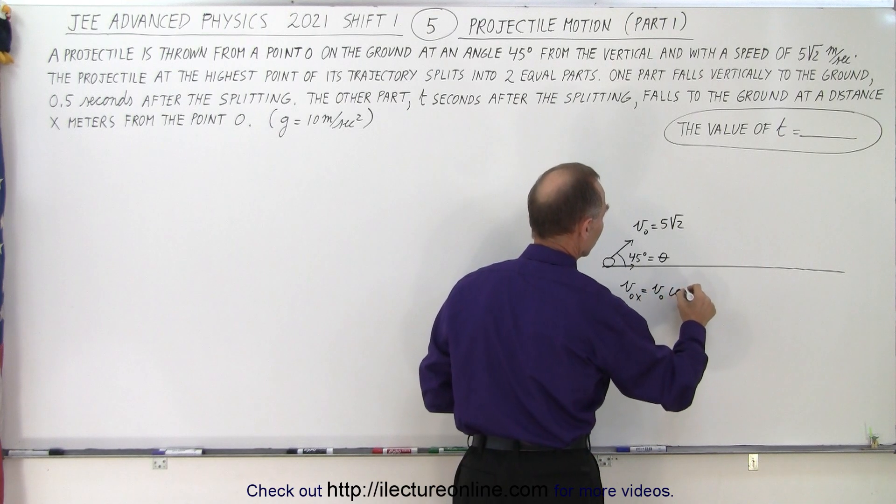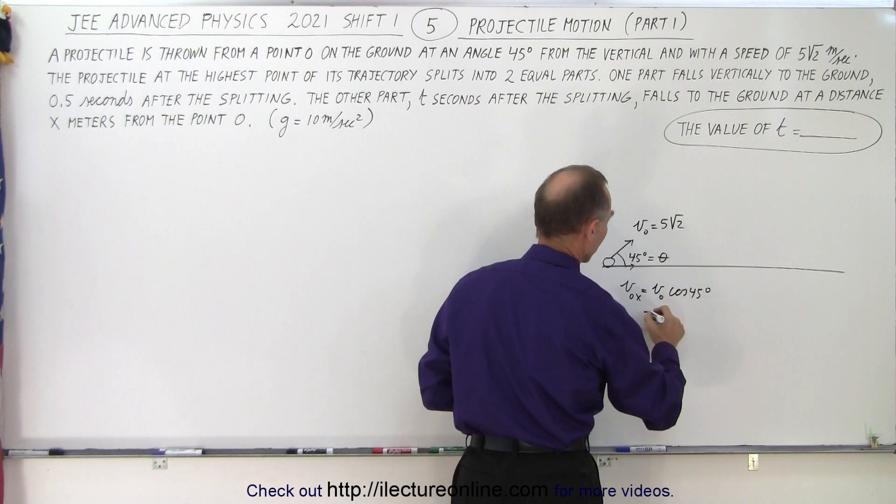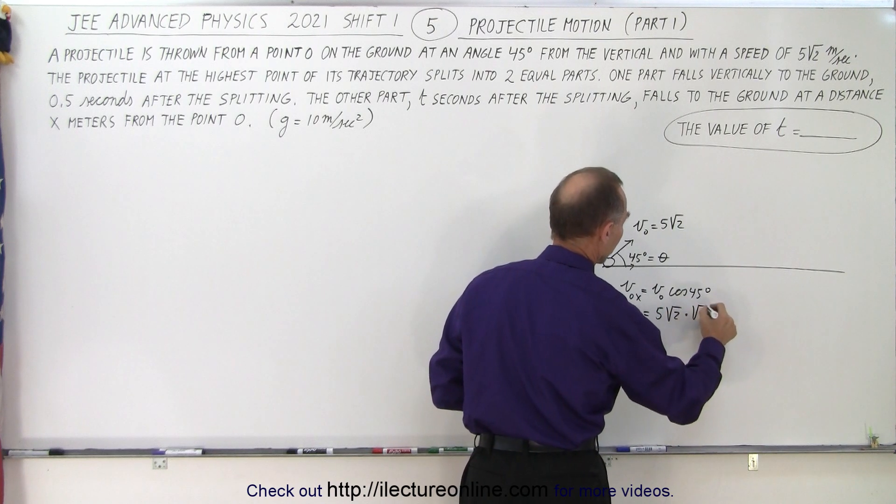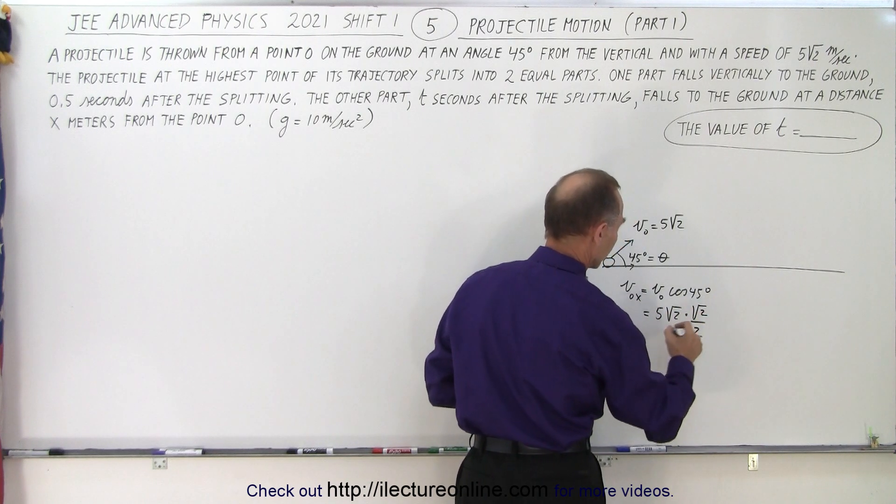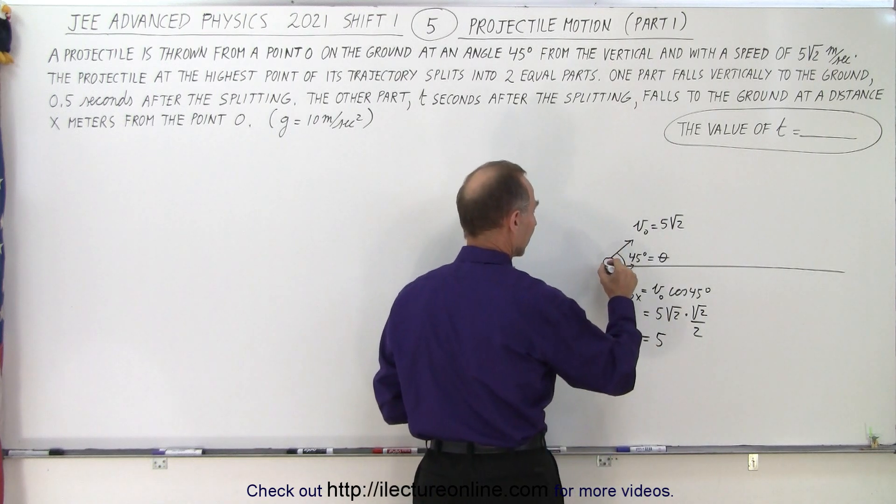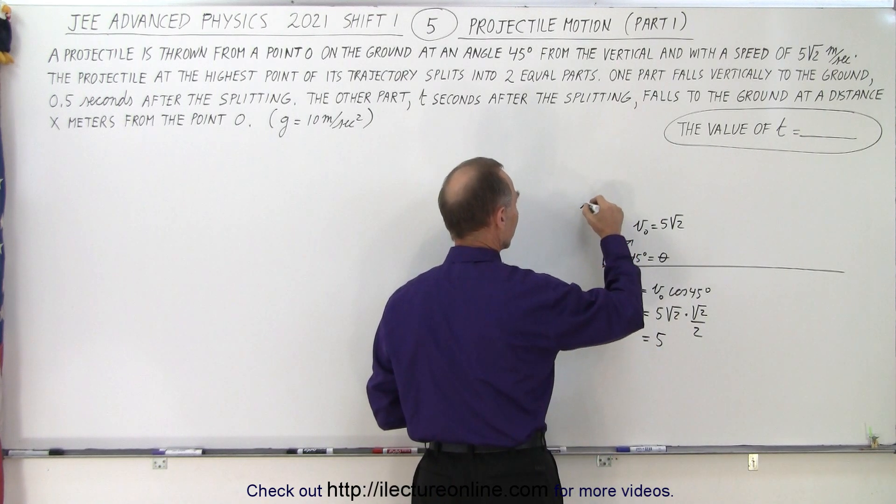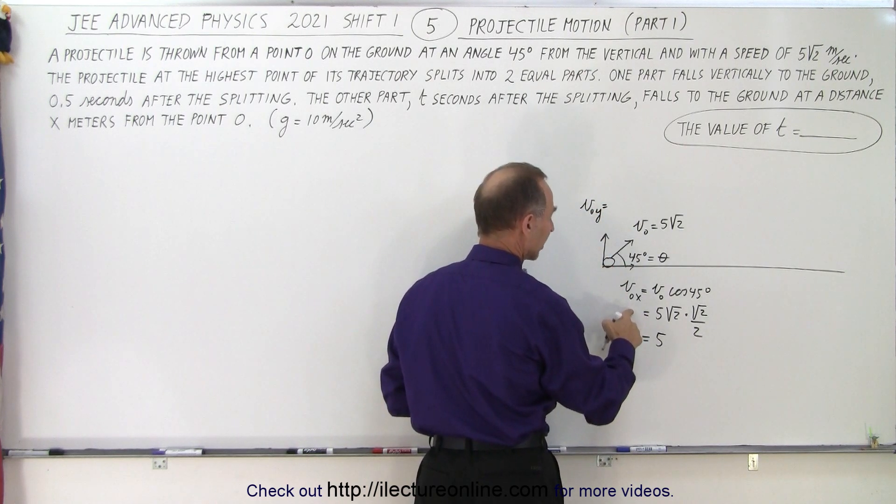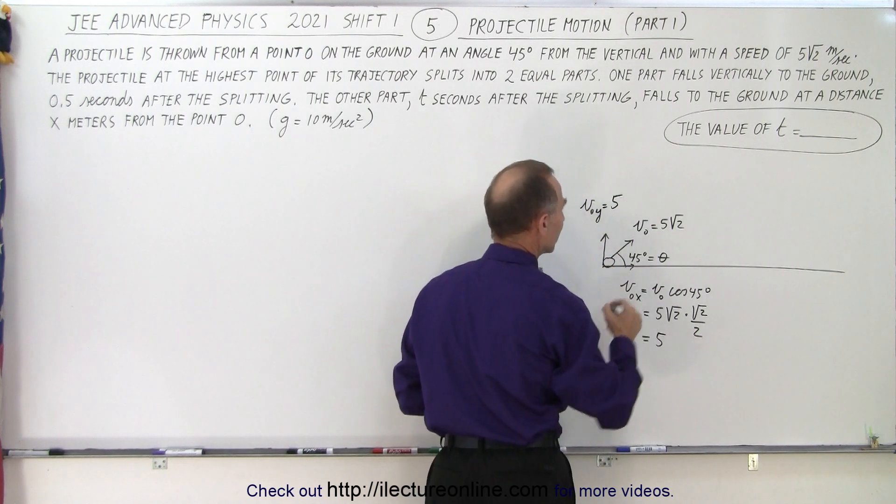that's equal to the initial velocity times the cosine of 45 degrees, which is equal to 5 times the square root of 2 times the square root of 2 over 2. So notice that this is equal to 5 meters per second. And then we know since it's a 45 degree angle, that the initial velocity in the y direction must be the same as the initial velocity in the x direction, which is also 5 meters per second.